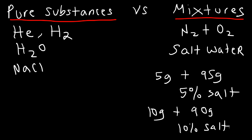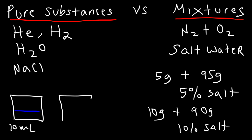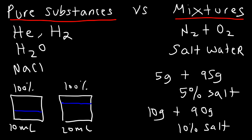As you can see, a mixture can have variable composition — you can have a 5%, 10%, or 20% salt solution. You can control the composition of your mixture. A pure substance has constant composition — the only thing you can change is the amount of matter. You could put 10 milliliters of pure water in a beaker or fill it with 20 milliliters, but in both cases it's still pure water.